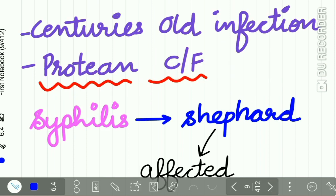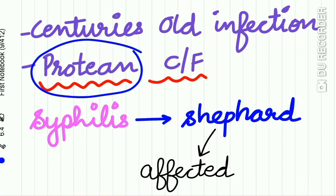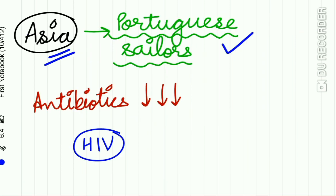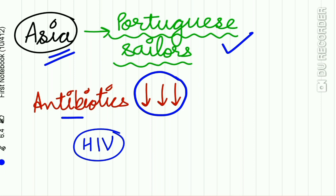Starting with the introduction: syphilis is a centuries-old infection which has very characteristic or protean features. The name syphilis is derived from a handsome and wealthy shepherd who was affected by the disease. The infection was carried to Asia by the Portuguese sailors led by Vasco da Gama. Recently, with extreme use of antibiotics, the spread of syphilis has been controlled, but nowadays with the emerging HIV pandemic, syphilis has returned.